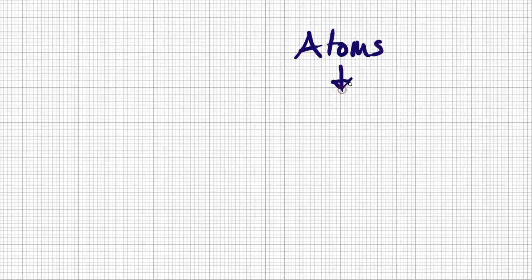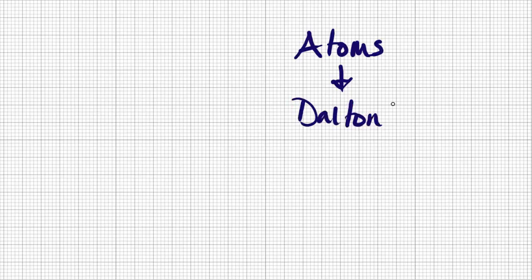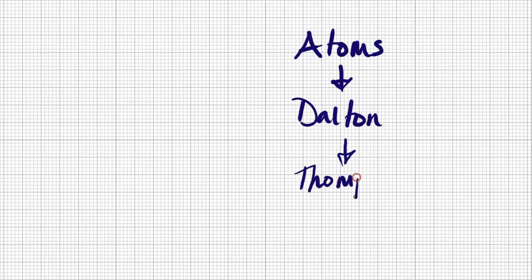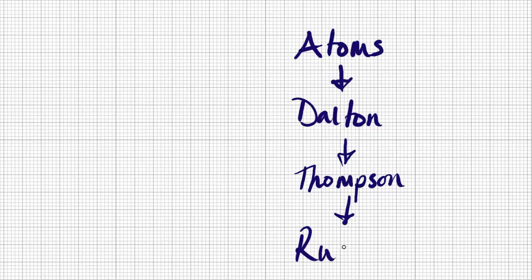The Greeks thought atoms were fundamental. Then chemistry developed and we got the Dalton model of the atom. Dalton said atoms are split into different groups called elements, and they can all link onto each other. Later we realized they were sharing or donating charge, and we came up with the Thomson plum pudding model.